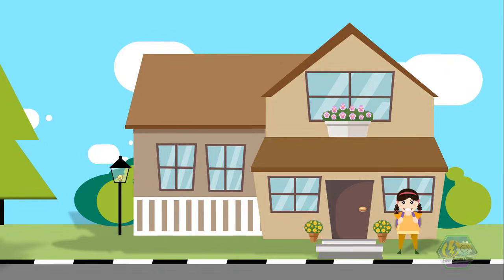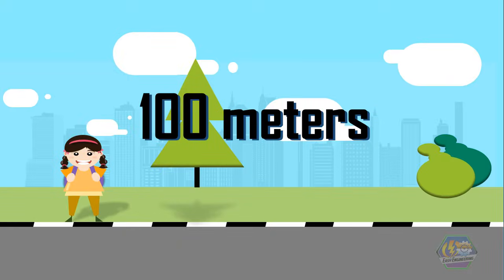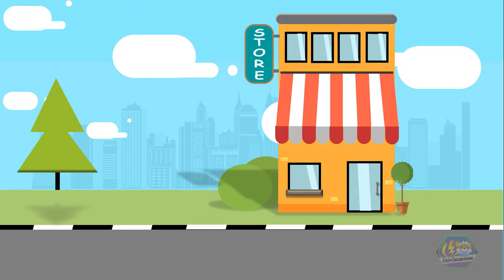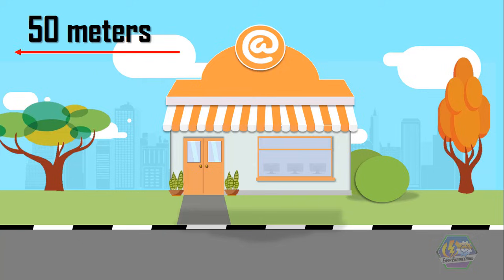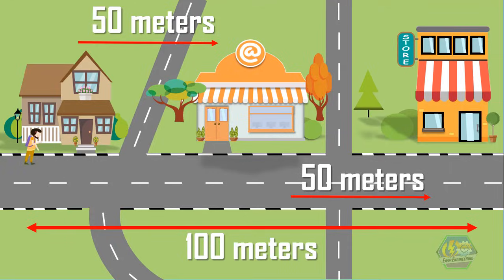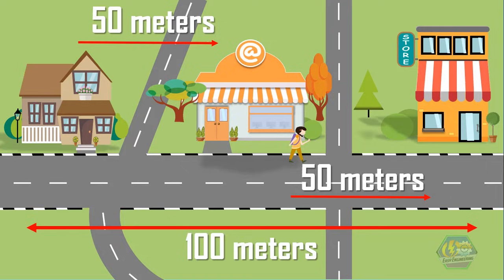Imagine your friend Suzy standing outside of her house. This is her original position. 100 meters away is where the convenience store is located. Between Suzy's house and the convenience store, there is an internet cafe — it is 50 meters away from Suzy's house. Suzy is having a walk going to the convenience store. She will pass across the internet cafe until she reaches the convenience store.